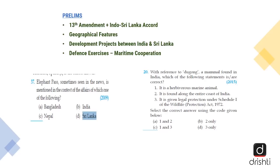From a prelims perspective, we can expect questions related to the 13th Amendment or the Indo-Sri Lanka Accord. For example: 'The 13th Amendment was recently in news. Which country was involved?' The answer is Sri Lanka. Related to geographical features, questions could be asked on the Gulf of Manar Marine National Park or Biosphere Reserve, and Dugong Dugong, which has already been asked. Development projects like the Indian Housing Project, and defense exercises like Mitra Shakti and Slinex, are also all-time favorites of UPSC. The Elephant Pass question has appeared previously, asking in the context of affairs of which country — the answer being Sri Lanka.